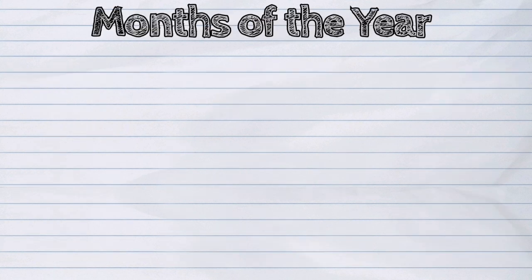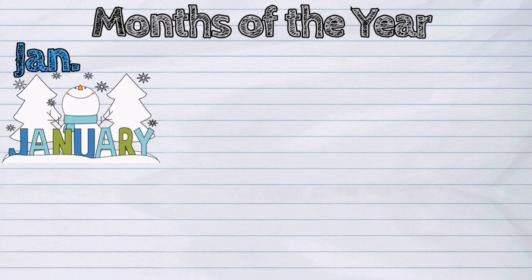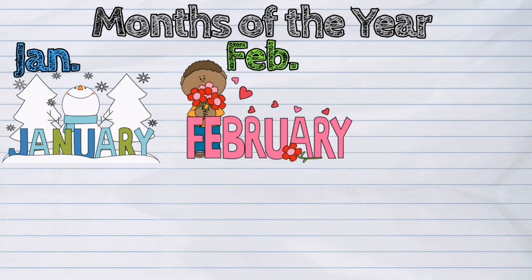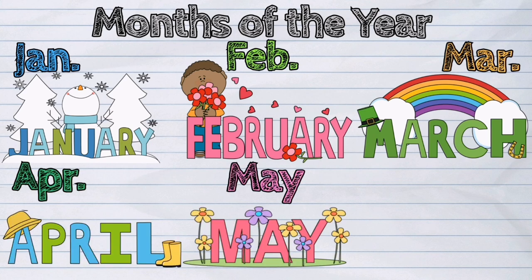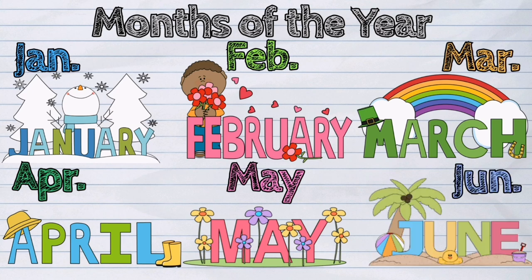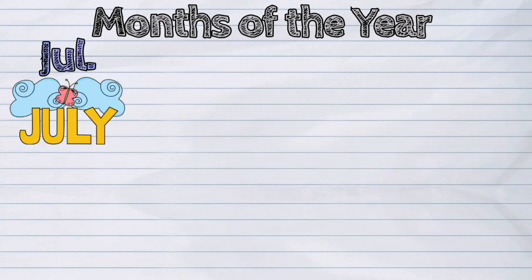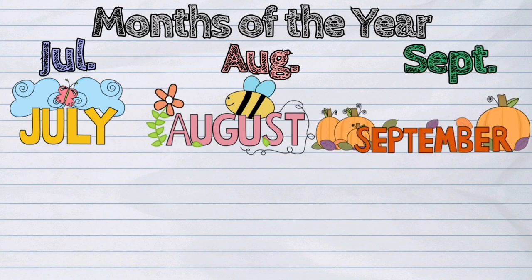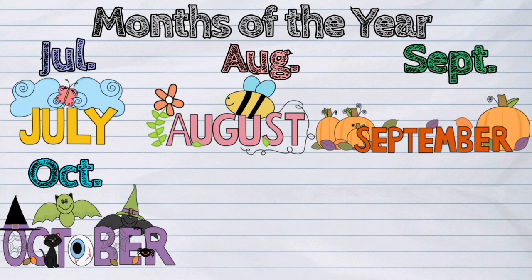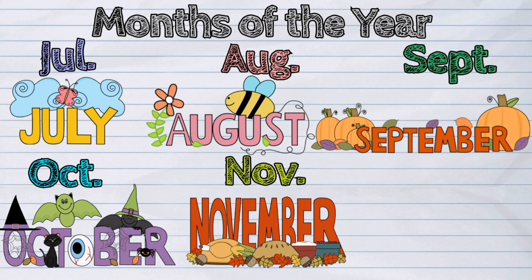For months of the year: January, February, March, April. May doesn't need to be abbreviated since it's just a three-letter word. June, July, August, September, October, November, December.